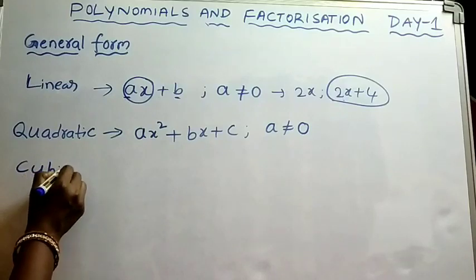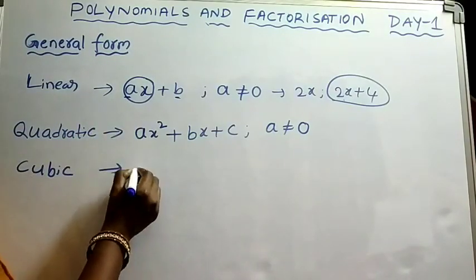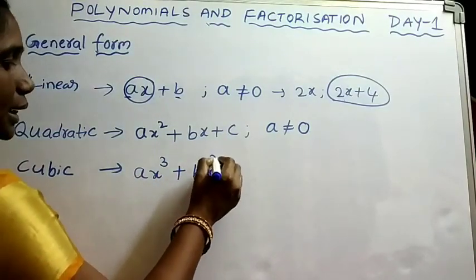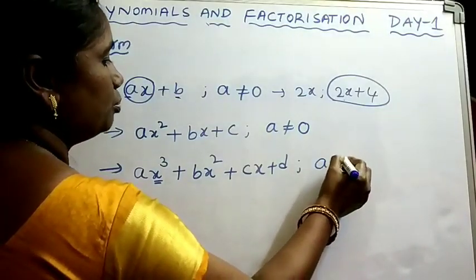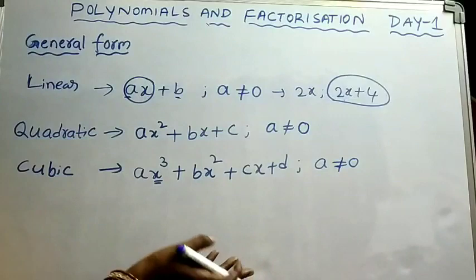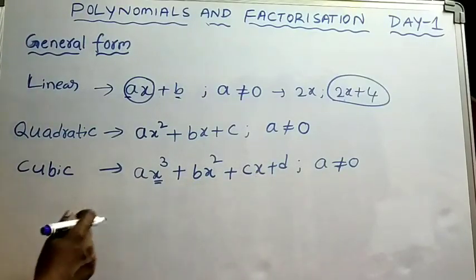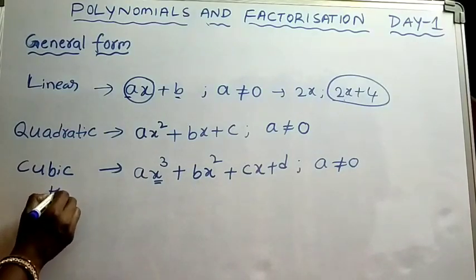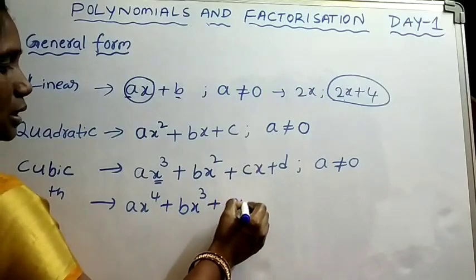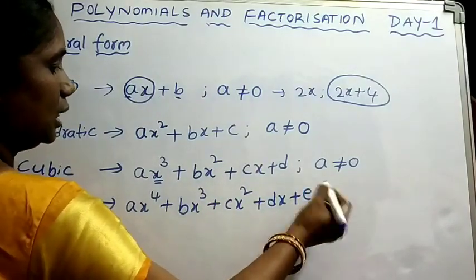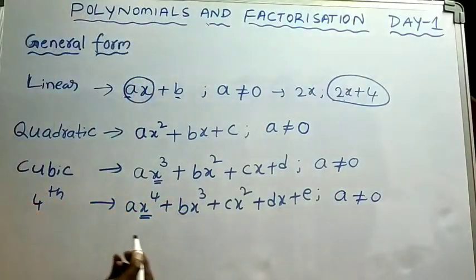The general form of a cubic polynomial (degree 3) is ax³ plus bx² plus cx plus d, where a should not be equal to 0. The coefficients b, c, d may be 0. For a 4th degree polynomial, the general form is ax⁴ plus bx³ plus cx² plus dx plus e, where the coefficient of x⁴, which is a, should not be equal to 0.